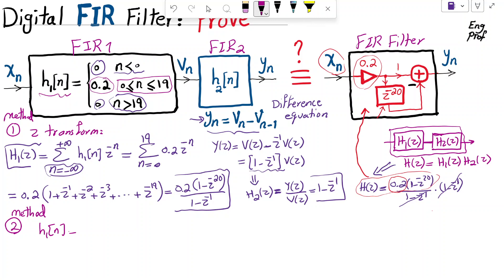So I can say H1 of N is equal to 0.2 times U of N minus U of N minus 20. Because U of N or unit step function, it would start having a value equal to 1 at N equal to 0 forever. But then we want to stop it at N equal to 20, because the last one we want to have a non-zero value is 19. So by subtracting U of N minus 20, we are forcing that only indices between 0 and 19 would have a value of 1 and then scaled by 0.2 to get us to what we want. So this is H1 of N.